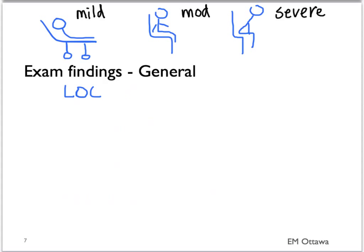We now look at level of consciousness. In mild and moderate exacerbation, their level of consciousness should be normal, whereas in patients with severe asthma exacerbation, they might be confused or have decreased level of consciousness.